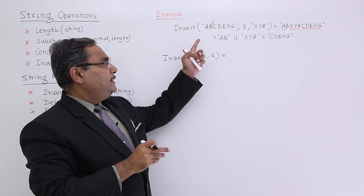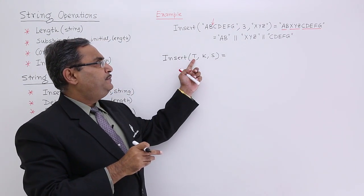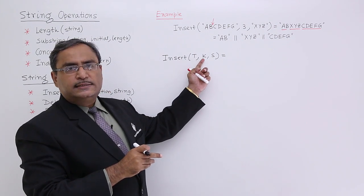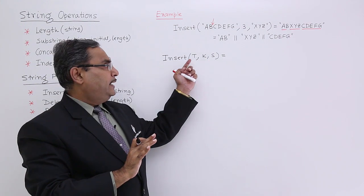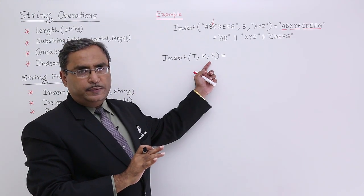What is T? In this example, it is ABCDEFG. K is 3 and S means XYZ. I am taking this a generic form in terms of variables.